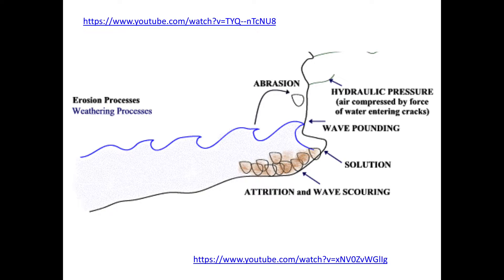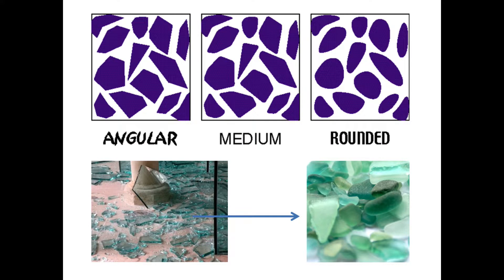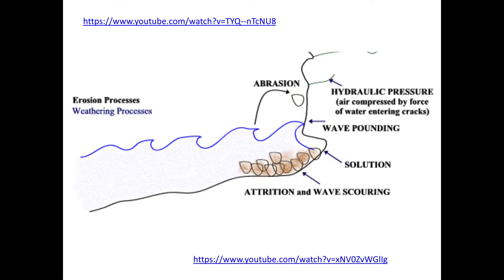Solution is the dissolving one — some rocks will actually just dissolve in the water very slowly, limestone being the perfect example. Attrition is slightly different because we're not talking about the cliff here, we're talking about the sediment in the sea. As the sediment is moved around by the water, the bits of sediment knock into each other and they get smaller and rounder over time. There are four, potentially five, types of erosion.